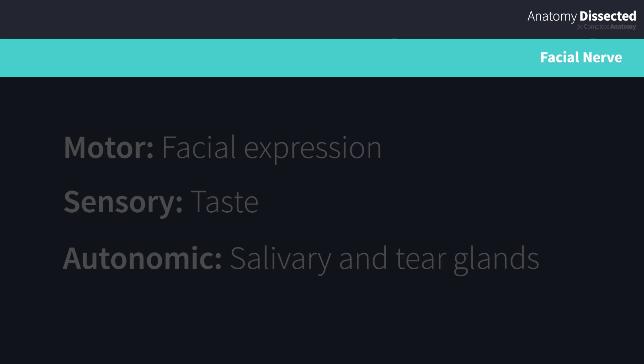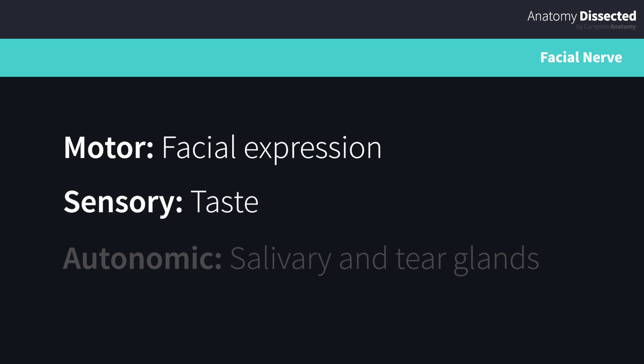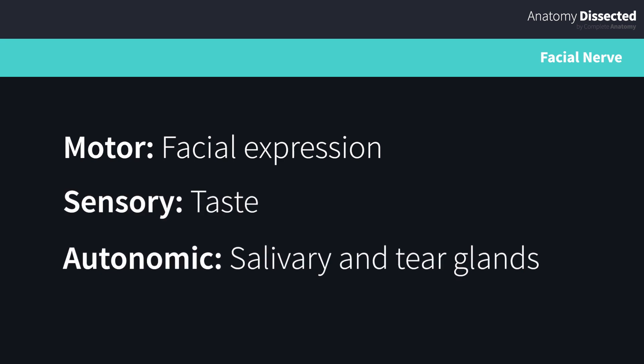The facial nerve is primarily known for supplying the muscles of facial expression. It also has a supplementary role in receiving taste sensation from part of the tongue and in the distribution of autonomic innervation to the salivary and lacrimal glands.